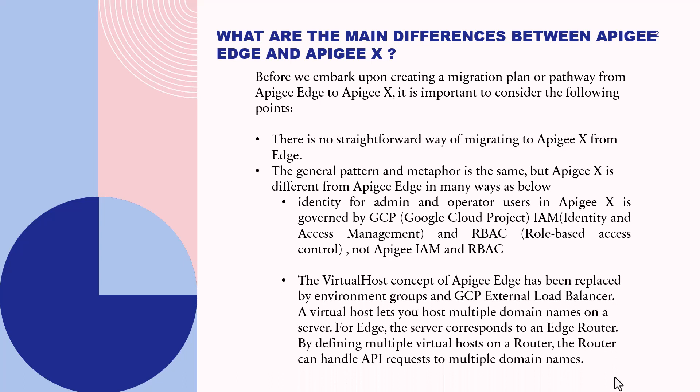The virtual host concept of Apigee Edge has been replaced by environment groups and GCP external load balancer. A virtual host lets you host multiple domain names on a server — for Edge, the server corresponds to an Edge router. By defining multiple virtual hosts on a router, the router can handle API requests to multiple domain names.